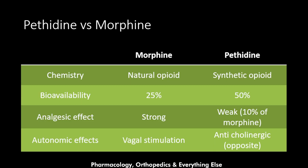Finally, a comparison between pethidine and morphine: morphine is a natural opioid isolated from the opium plant, while pethidine is a synthetic opioid. Morphine bioavailability is 25% while pethidine is 50%. Morphine has strong analgesic effect; pethidine is weak at 10% of morphine's potency using the same dose. Regarding autonomic effects, morphine leads to vagal stimulation while pethidine leads to anticholinergic effects — opposite to morphine.